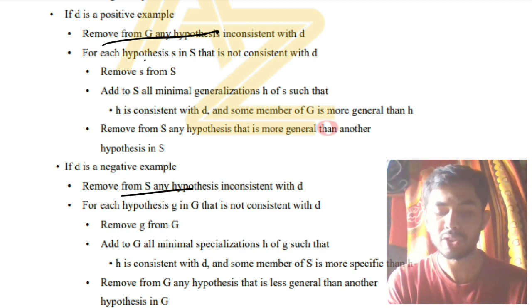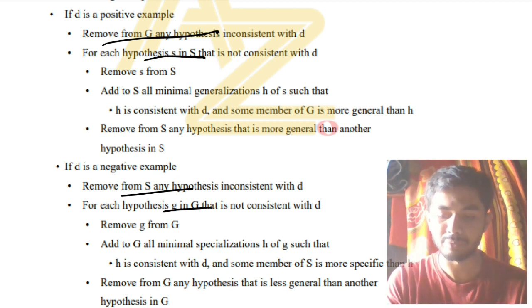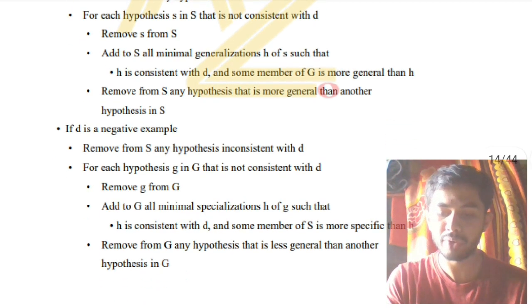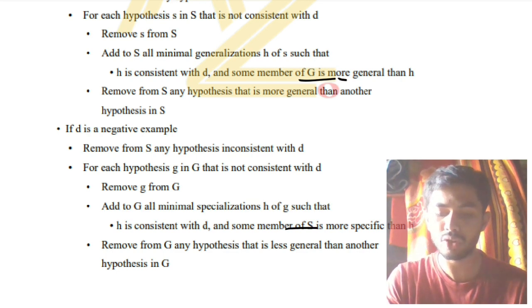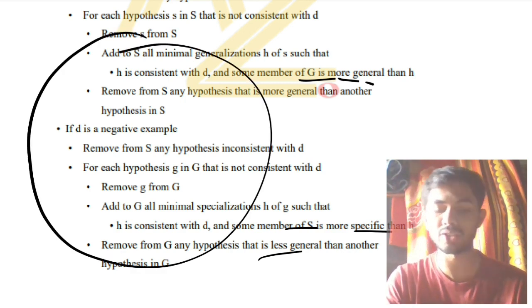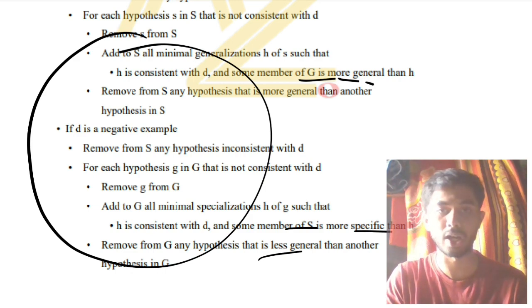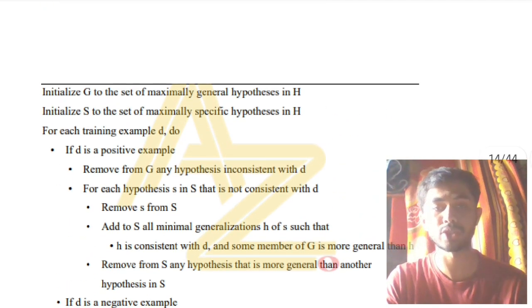See the pattern: 'remove from G any hypothesis', 'remove from S any hypothesis', 'for each hypothesis s in S', 'for each hypothesis g in G' — wherever S appears write G, wherever G appears write S, wherever 'more general' write 'more specific'. Very simple. Just write it once and you'll get it. That was about the third super important question.